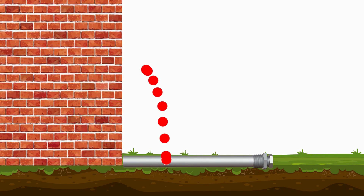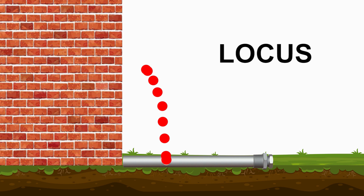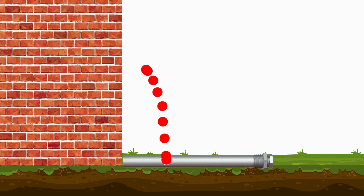Can you see the set of points? Well, this set of points is called the locus of the white dot. But how do you draw that?